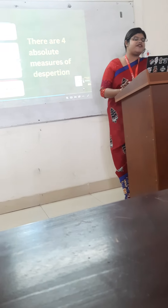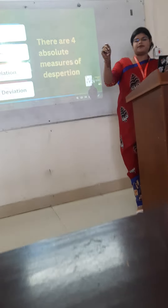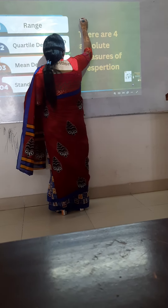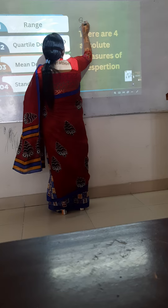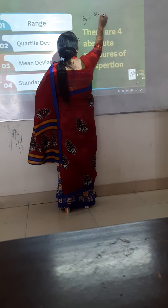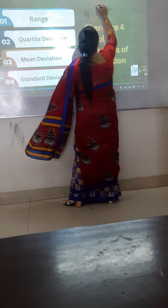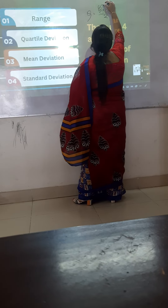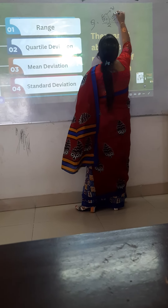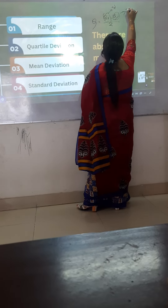Then we have quartile deviation. Quartile deviation can be indicated by Q, and the formula is Q = (Q3 - Q1) / 2. Q3 is the third quartile and Q1 indicates the first quartile.